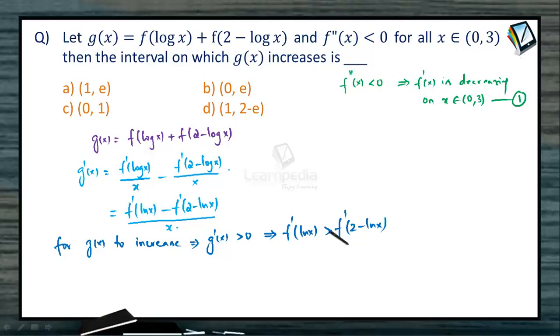Now for this inequality of f', we use the first relation: f' is a decreasing function on (0,3). For f' to have a greater value at ln x than at 2 - ln x, this is possible only if ln x < 2 - ln x, that is 2 ln x < 2.